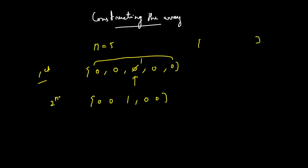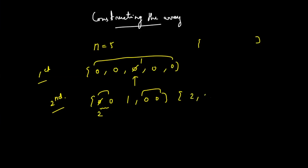At your second turn, you find the longest consecutive subarray filled with zeros. There are two subarrays of the same size. Whenever that happens, you take the subarray that occurs first from the left and find its middle. Since there are an even number of elements, L plus R minus 1 divided by 2 is the middle — so you replace it by 2, giving the array 2, 0, 1, 0, 0. Continuing: on the third turn you replace by 3, on the fourth turn by 4, on the fifth turn by 5. The resultant array is 2, 4, 1, 3, 5, which is your answer.